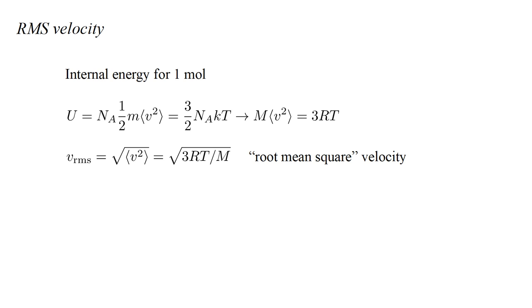Solving for the square root of the mean square velocity, and calling this the root mean square velocity, we obtain V_RMS equals square root three R T over big M.